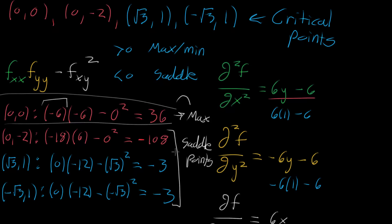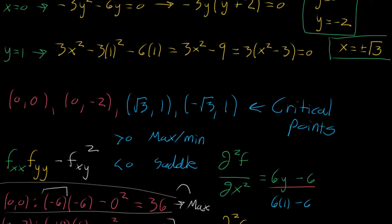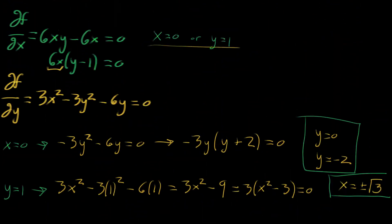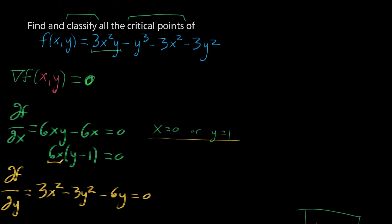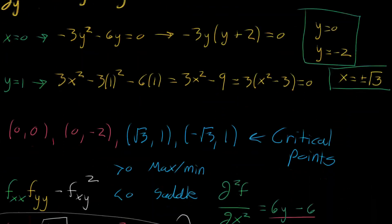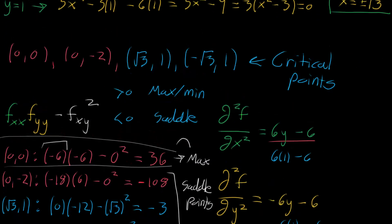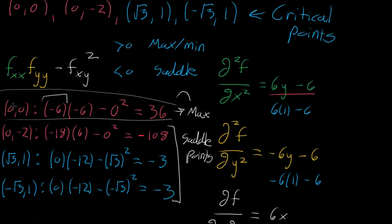So the answer to the original find-and-classify question: we found four different critical points — (0,0), (0,-2), (√3,1), and (-√3,1) — and all of them are saddle points except for (0,0), which is the local maximum. All of that is something we can tell without even looking at the graph of the function. And with that, I will see you next video.